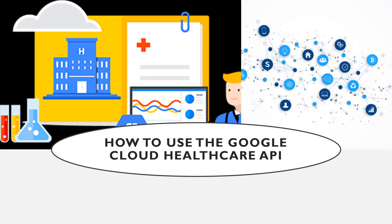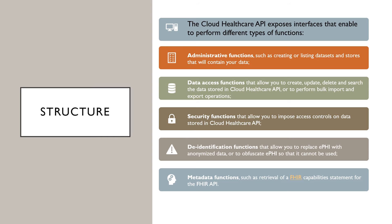Now let's consider how to use the Google Cloud Healthcare API. Before starting, I would like to say a couple of words about structure to expand our understanding of how it works. The Cloud Healthcare API exposes interfaces that enable performing different types of functions: administrative functions such as creating or listing datasets and stores that will contain your data; data access functions that allow you to create, update, delete, and search data stored in the Cloud Healthcare API or to perform bulk import and export operations; security functions; de-identification functions; and metadata functions such as retrieval of a FHIR capability statement for the FHIR API.